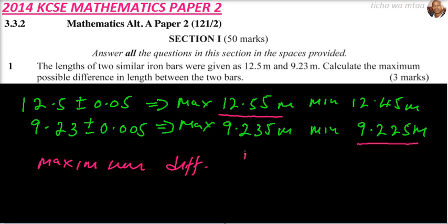We just say it is 12.55 and we subtract 9.225, that is the minimum of the second value. And here you get 5, this will be carried 1, so it is 4 minus 2 is 2, this will give us 3, then here we have 12 minus 9, we get 3. So the maximum difference is 3.325 meters. That is how you work out that question.